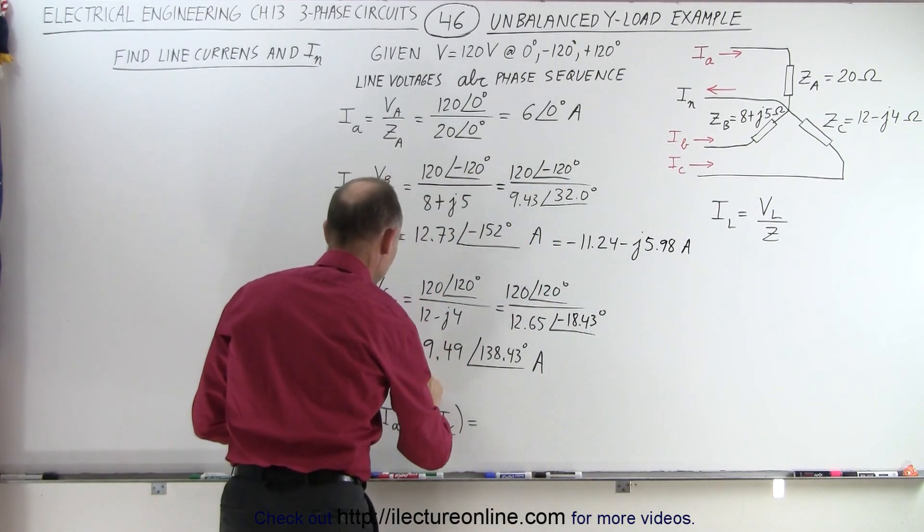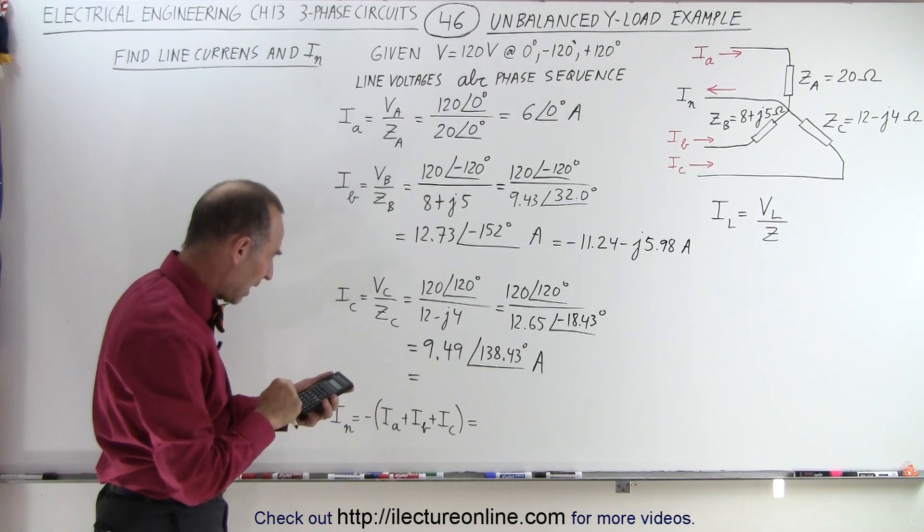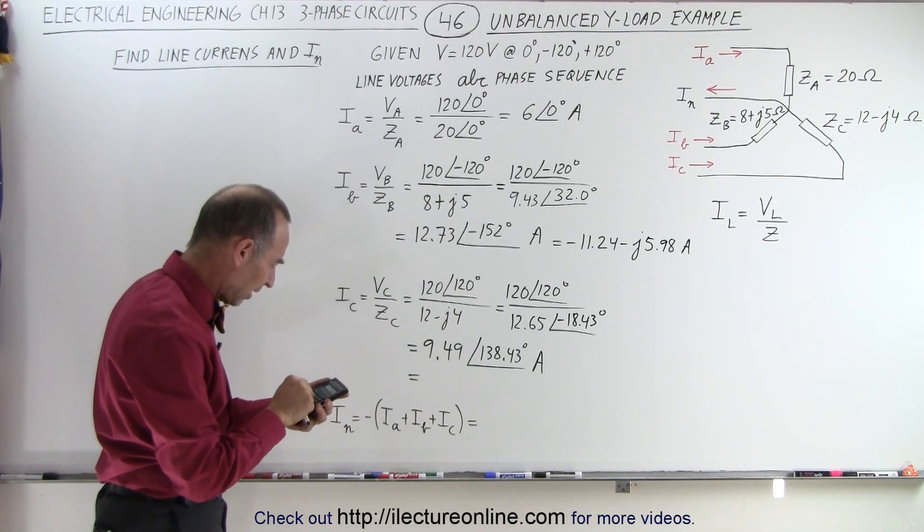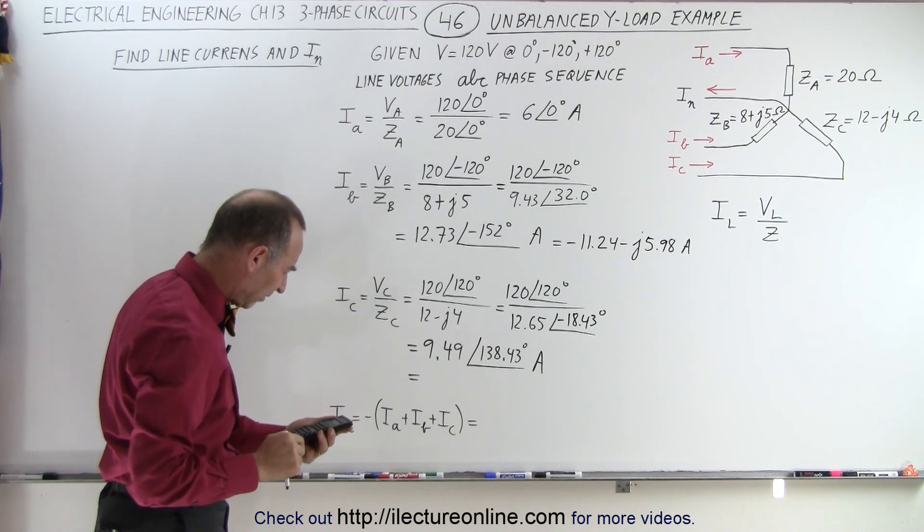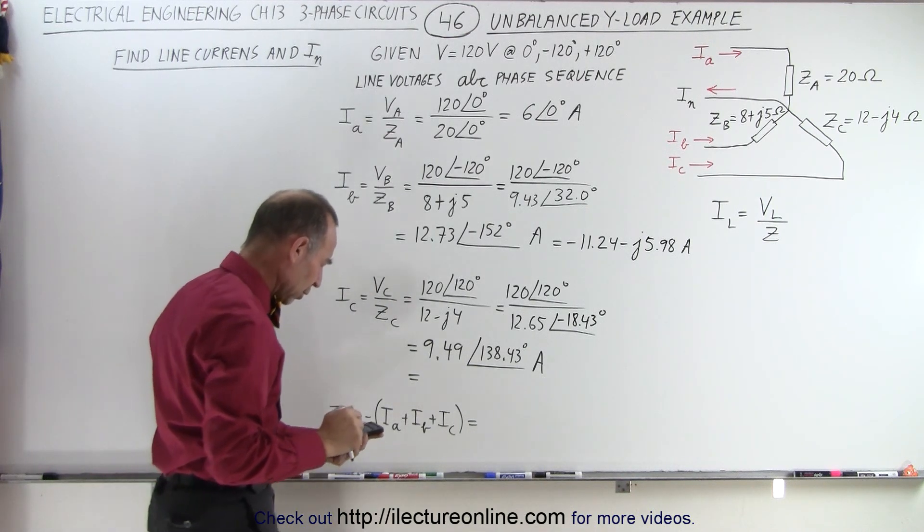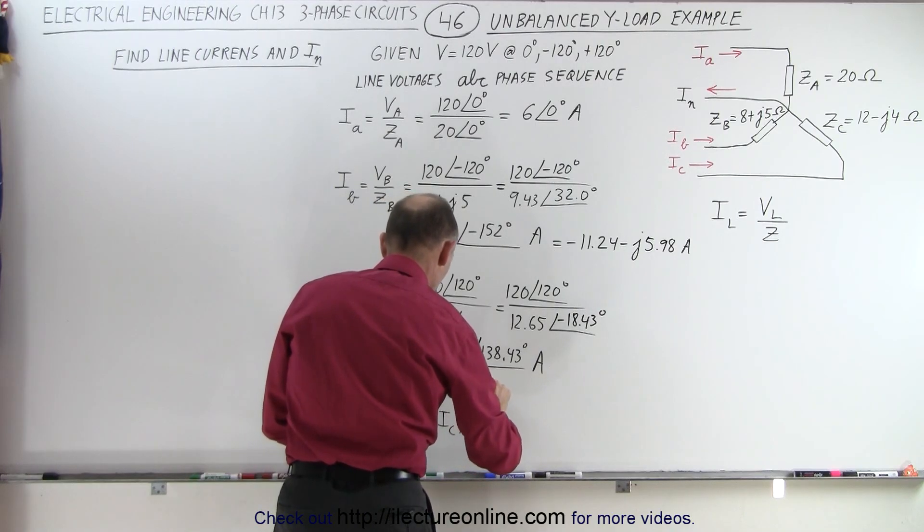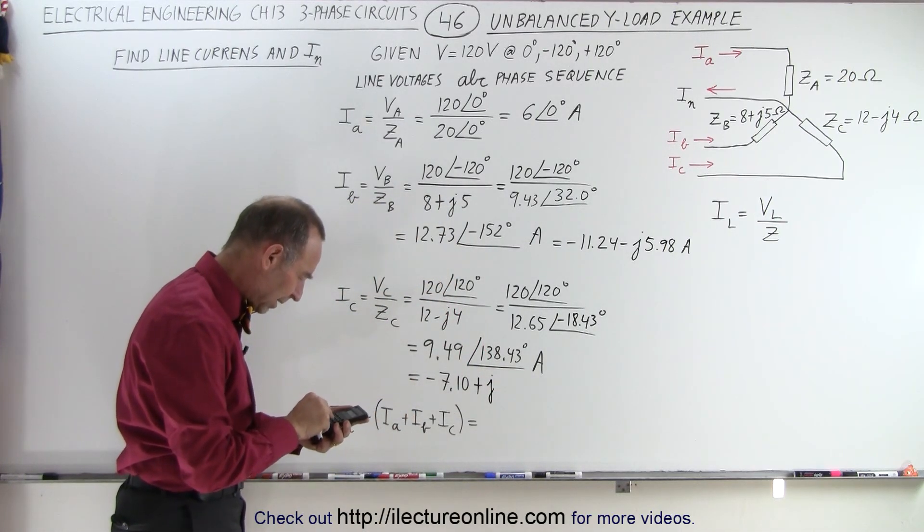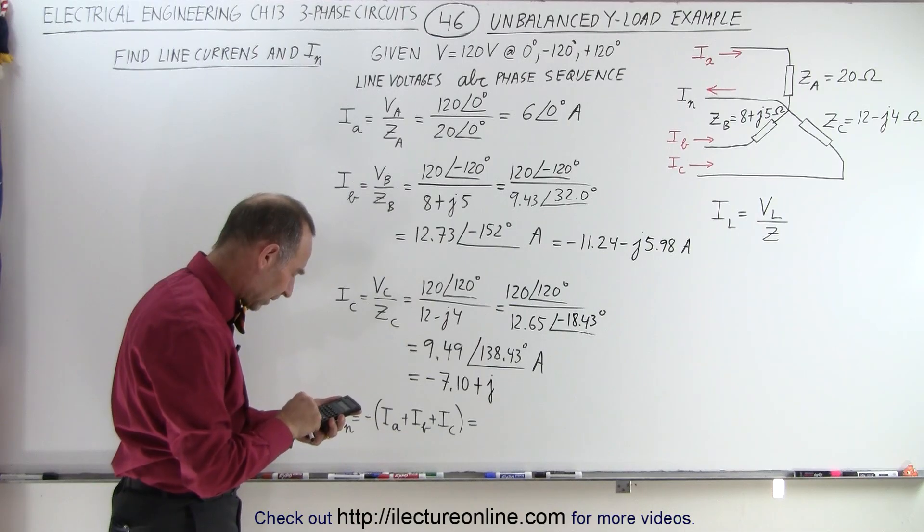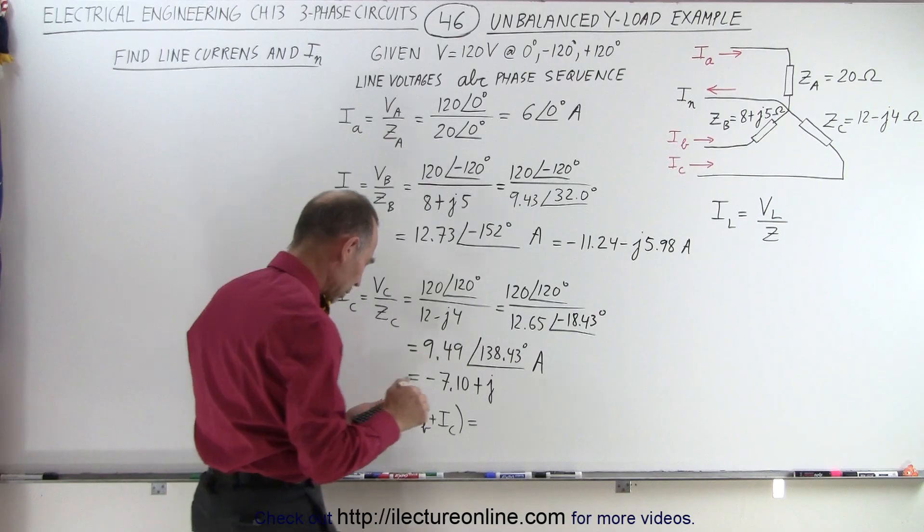Let's do the same for this one here, let's get the real imaginary part of that. We take 138.43, take the cosine, gives us a negative number, times 9.49, gives us a minus 7.10, with that would be a plus J, 138.43, take the sine of that, multiply it times 9.49, that gives us 6.30.